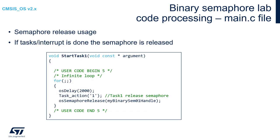The first code modification we will do is within the StartTask1 function. We will start with an OSDelay function to send Task 1 to blocked state for two seconds. Then, after its return to run state, we will send '1' over SWO using the task_action function. After this, we will release the semaphore.